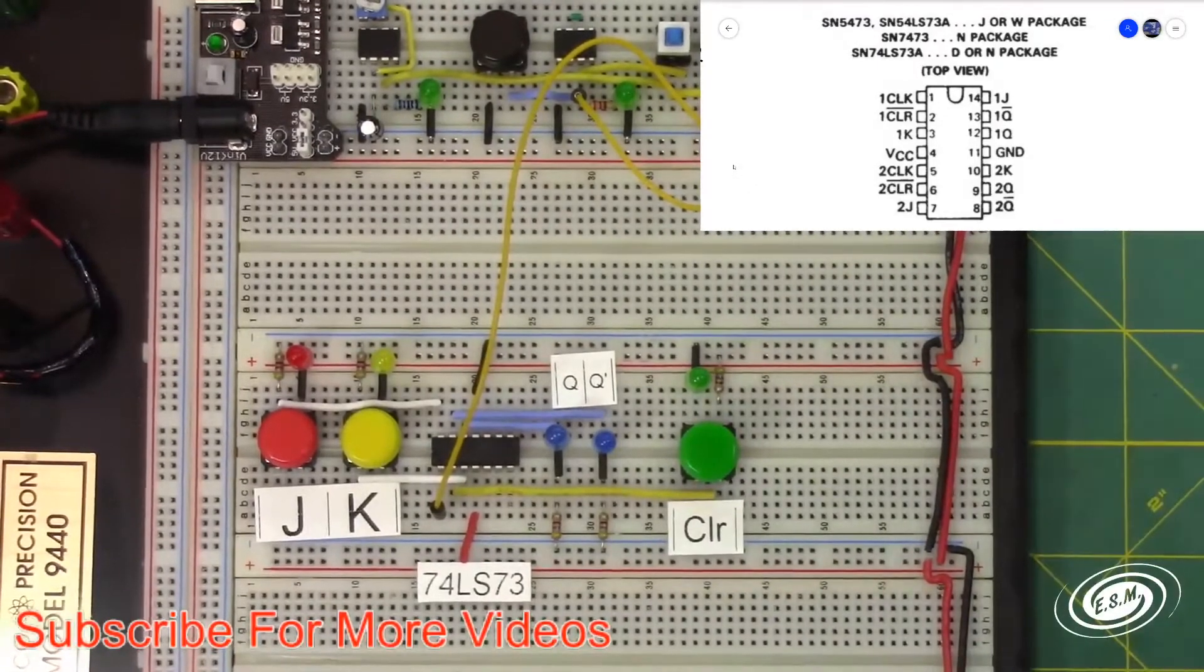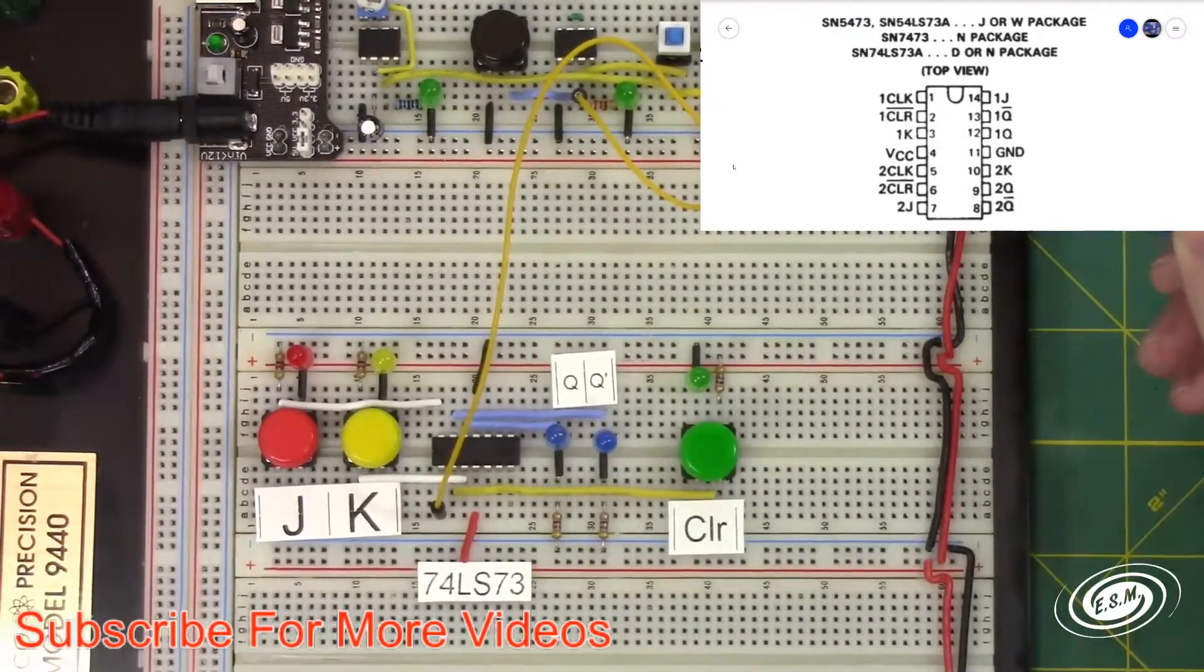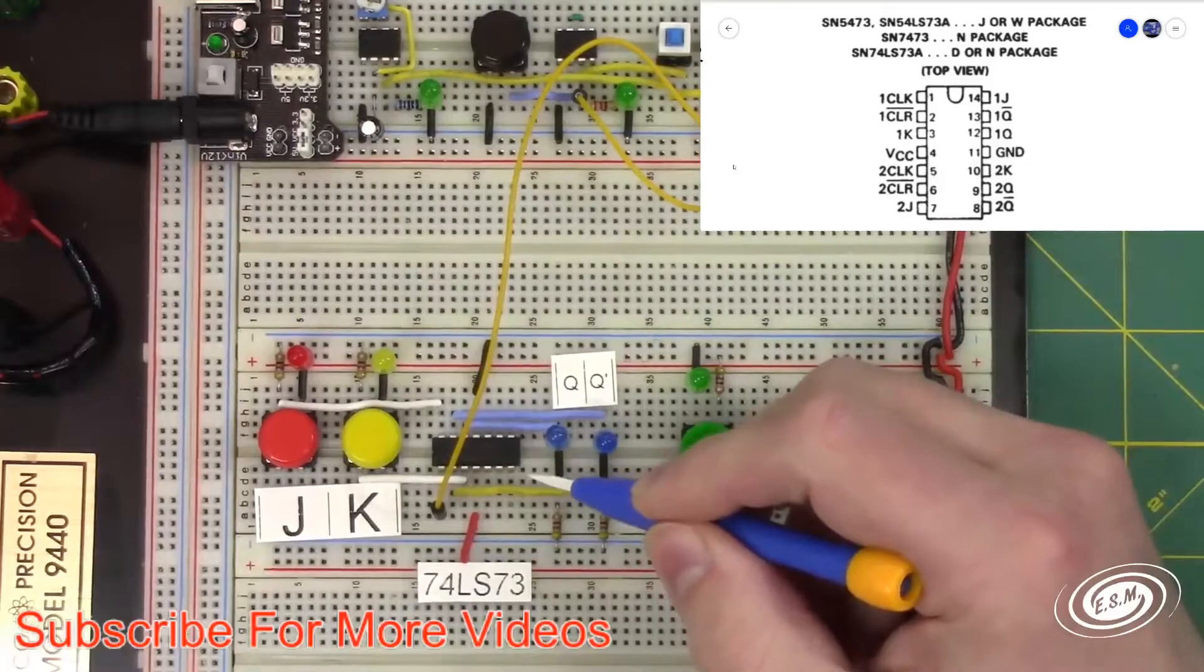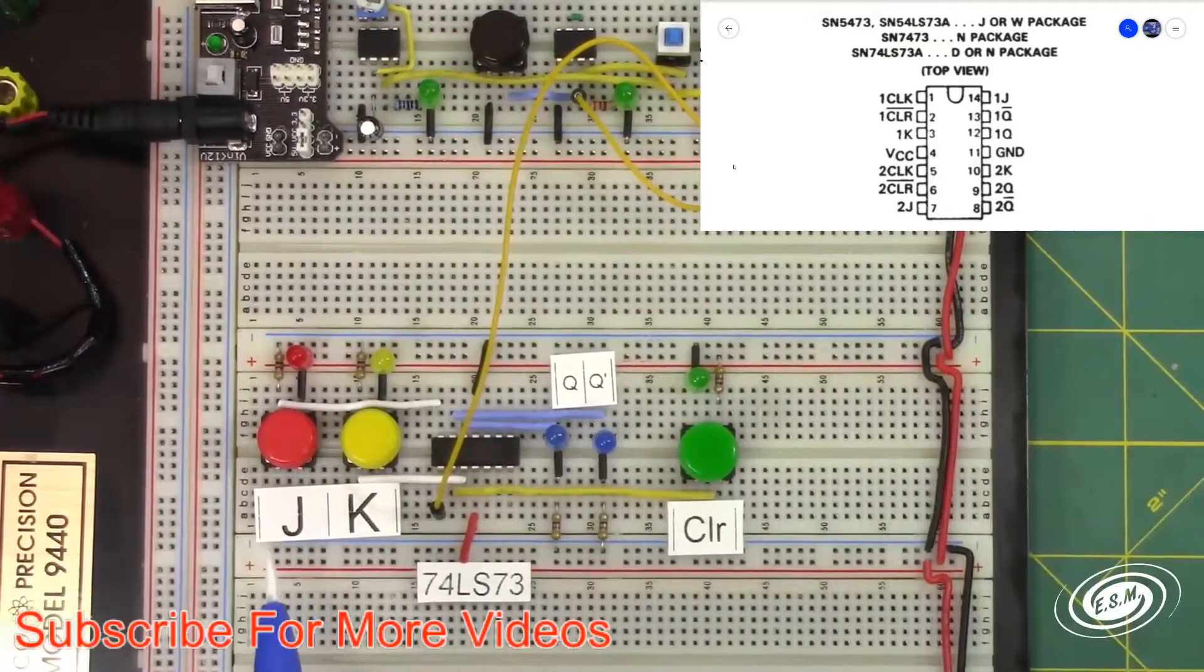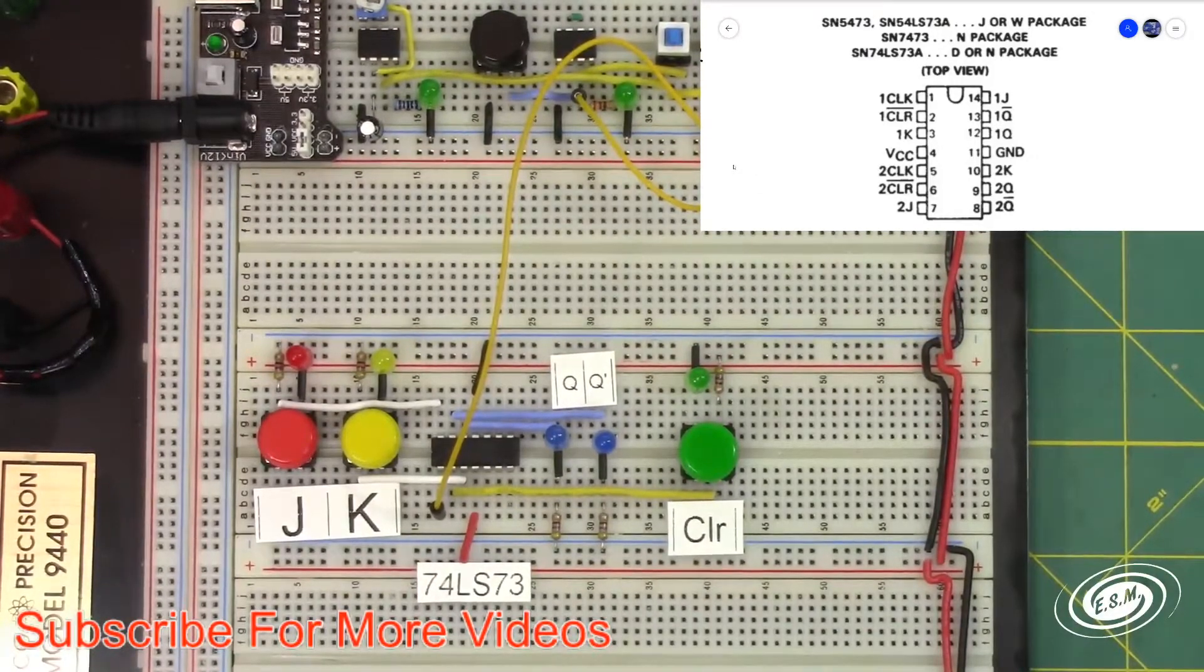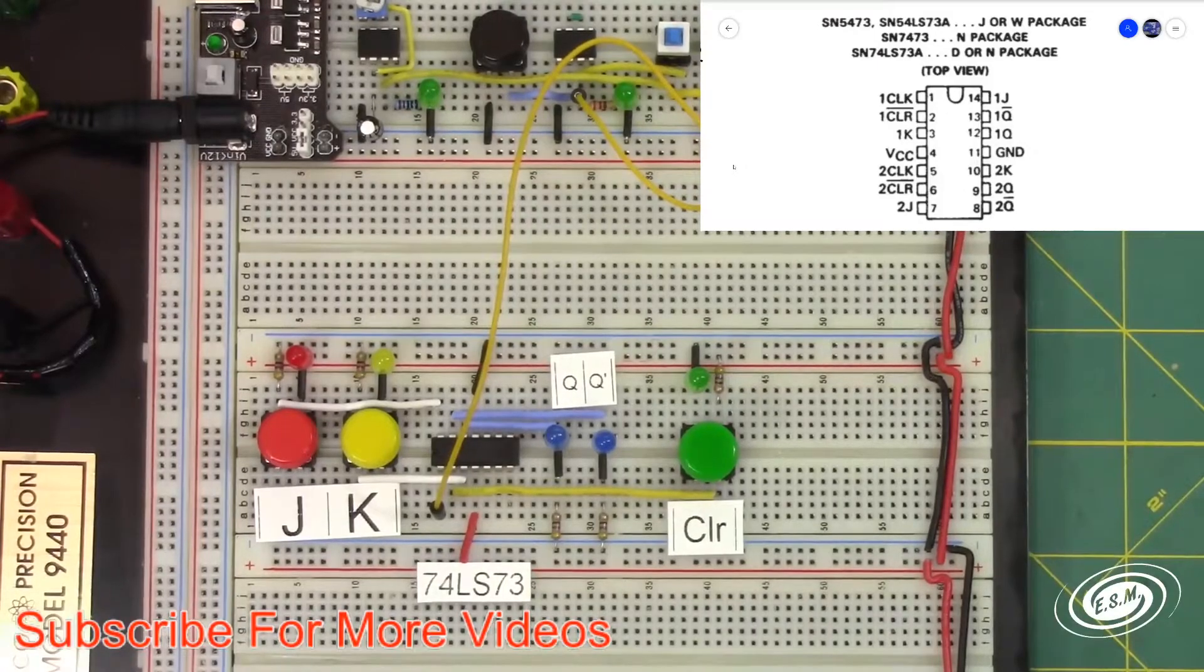Okay, so we have our JK flip-flop here and our two inputs - the J input and K input. I put these labels on here.